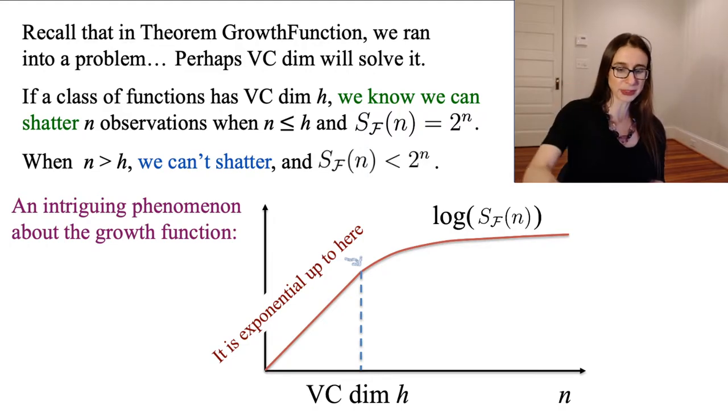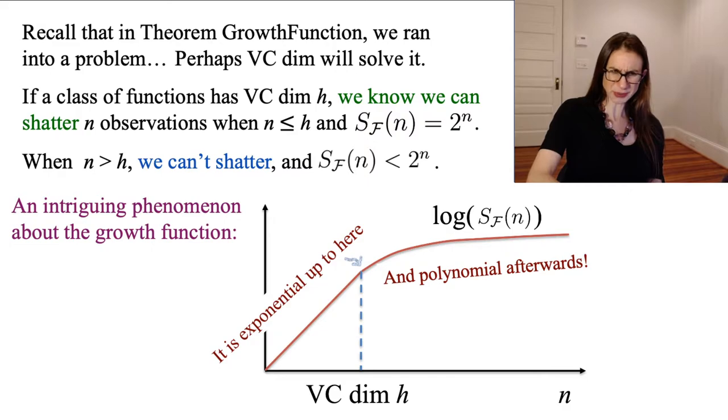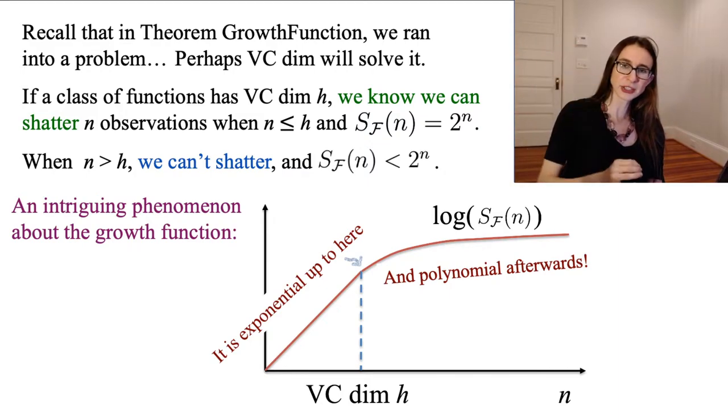But then afterward, it becomes polynomial. So that's pretty cool. And what's even more interesting is that you can upper bound the whole curve there as a function of one single number, which is the VC dimension.